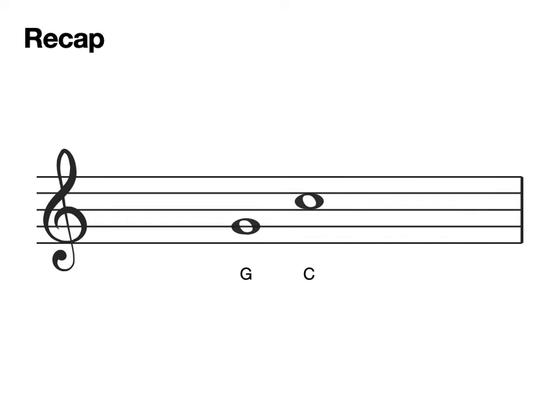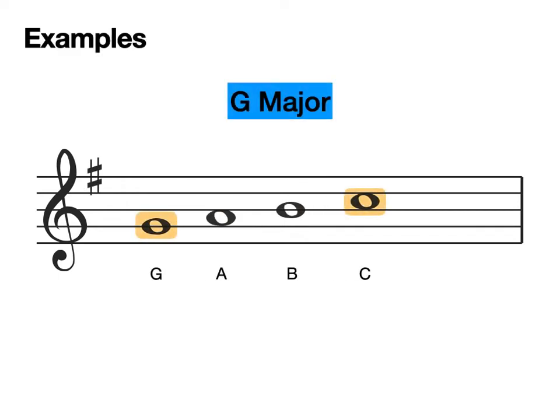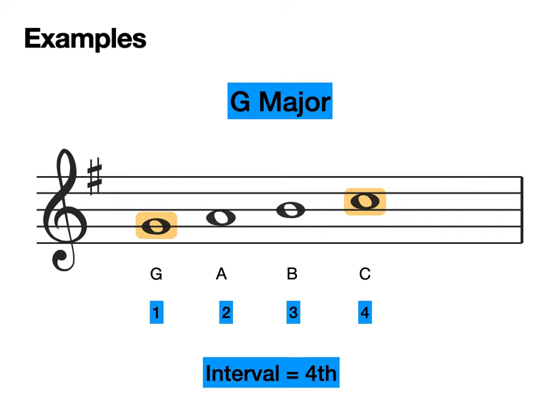But firstly, let's recap what we learned last time. Last time we looked at how to work out the distance between two notes. So what two notes do we have here? That's right, we have a G natural followed by a C natural. So what is the distance between these two notes? Let's write out the beginning of the G major scale and C. As you can see, C natural is the fourth note of G major, making the interval between these two notes, G and C, the interval of a fourth.